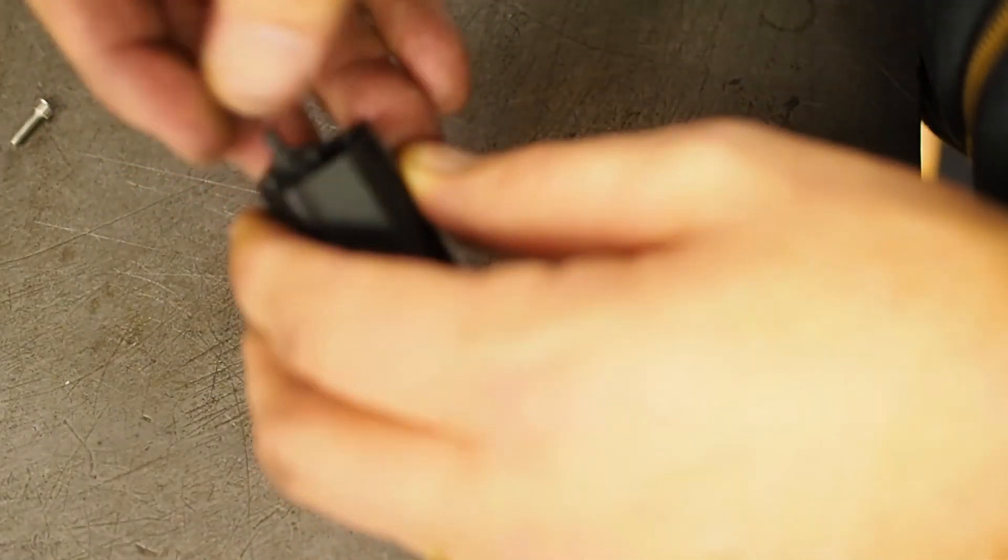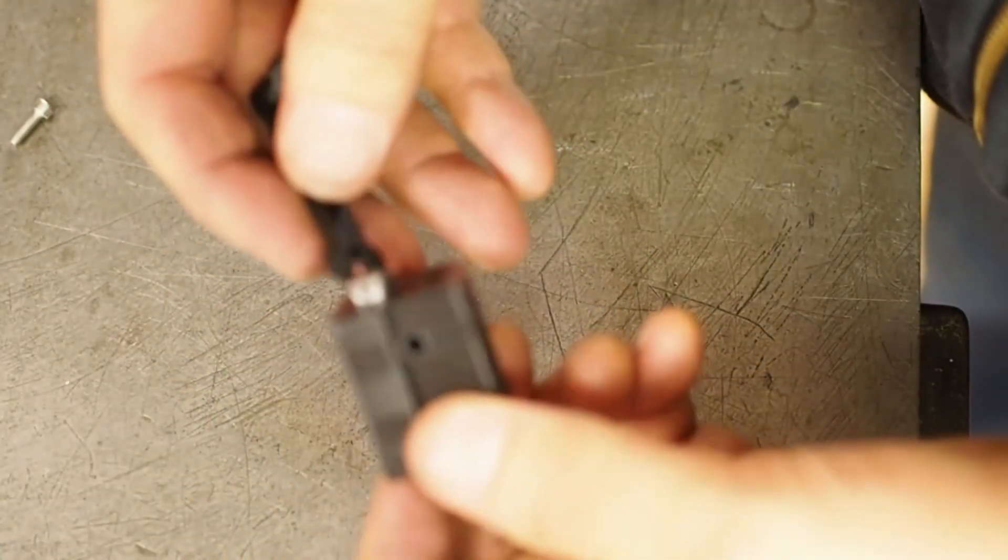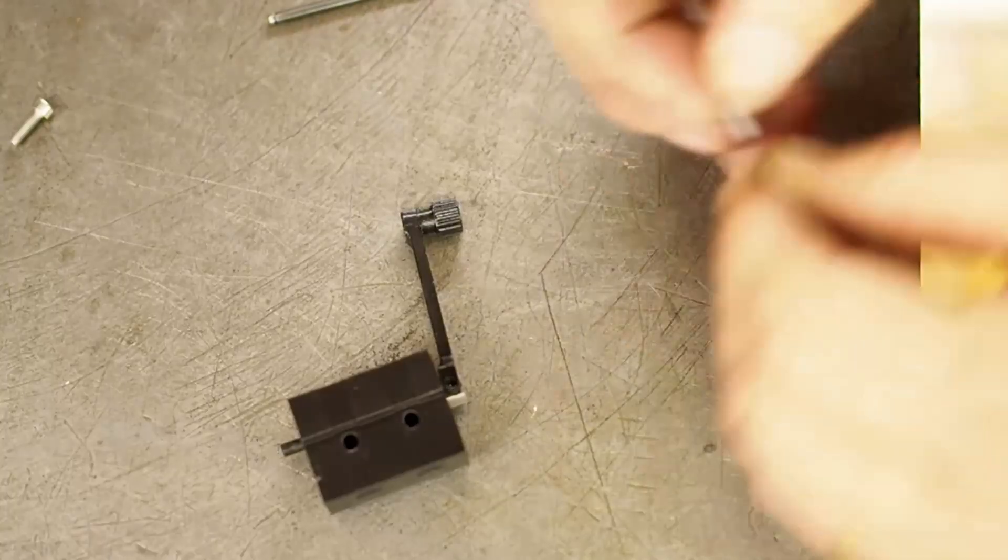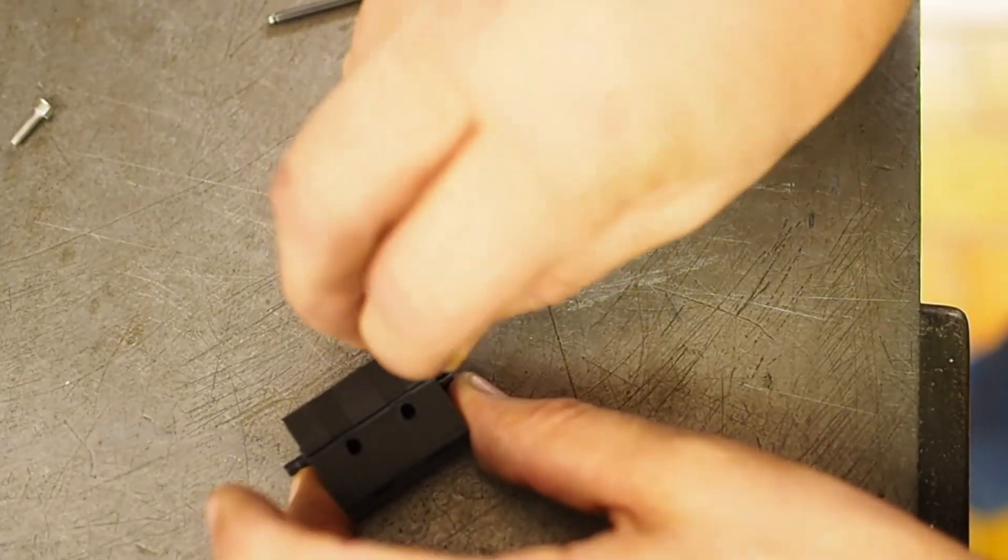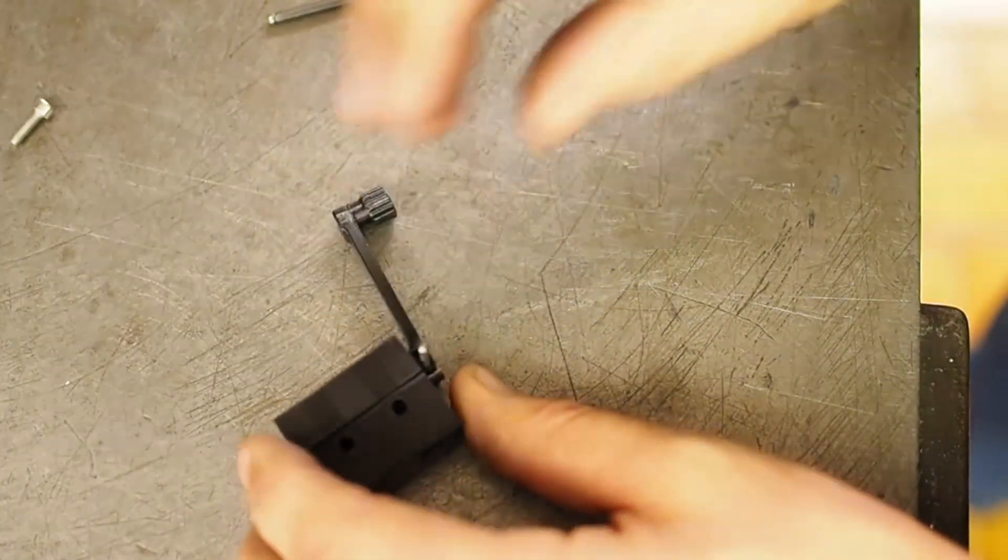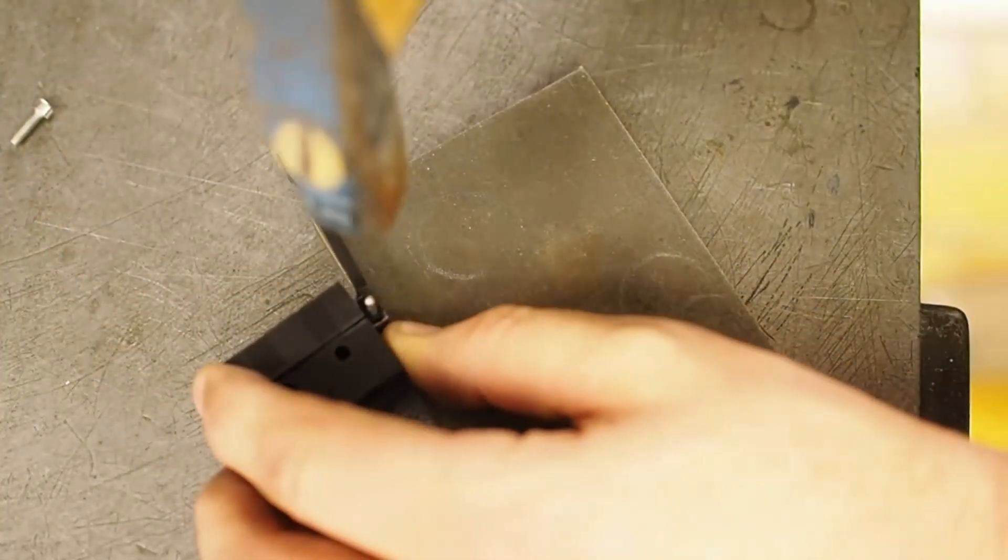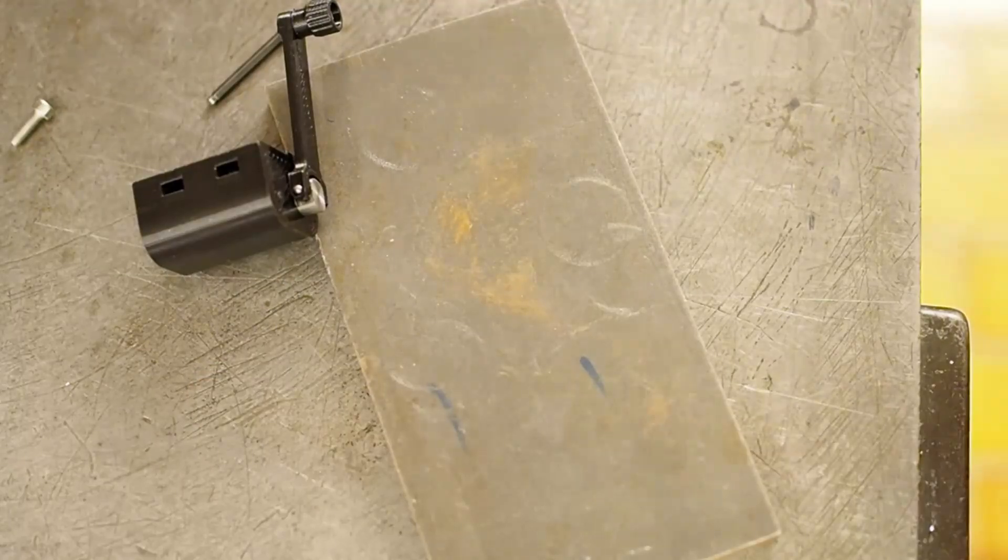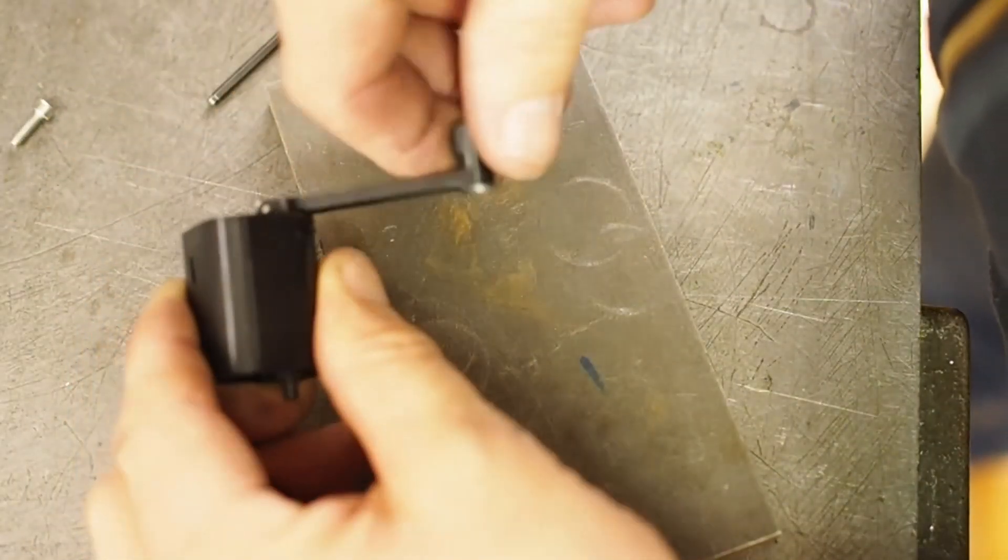Next up gear goes in. Handle goes over the top. That gives us a crank assembly.